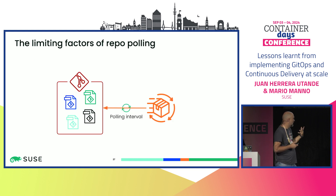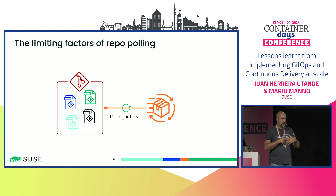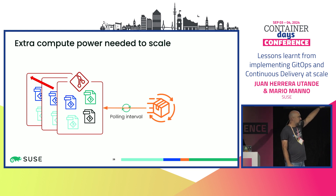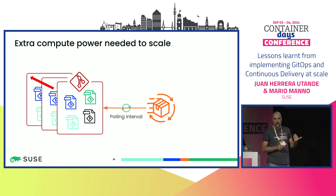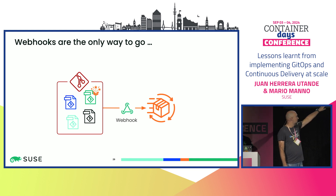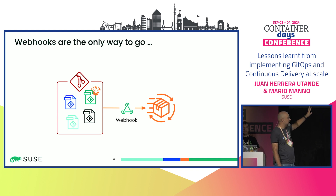The last topic is, obviously, webhooks. When you scale, you cannot keep polling Git repos for changes. Polling works fine at smaller scales, but as you scale it becomes a problem — the continuous delivery server is already doing a lot. We strongly recommended implementing a webhook system. The main advantage is that you only consume resources when there is an actual change, and you avoid rate-limiting issues on the Git host side. The recommendation is always to use webhooks.